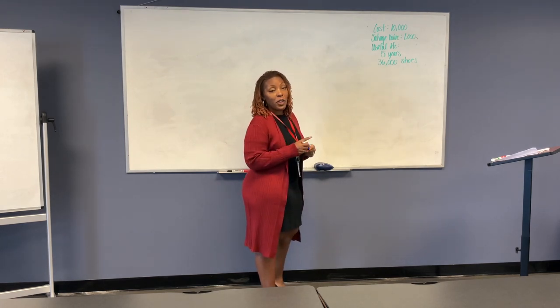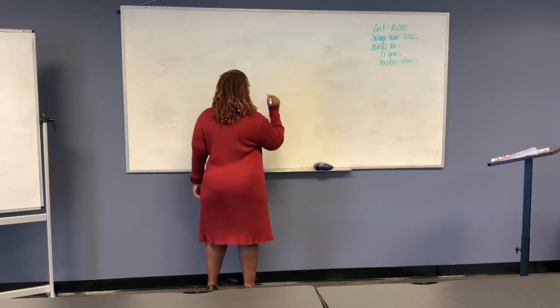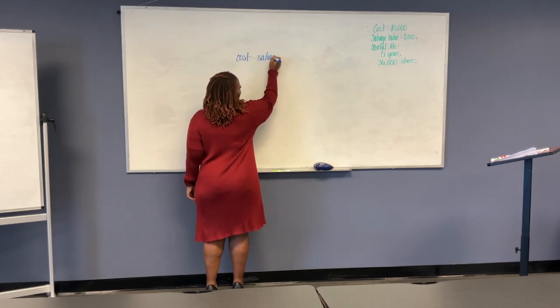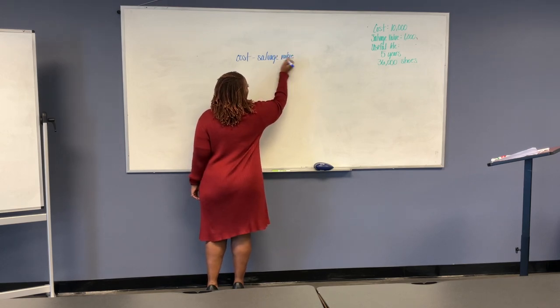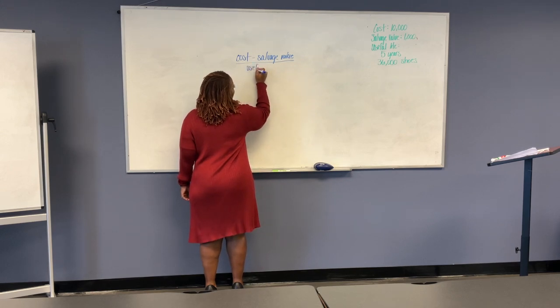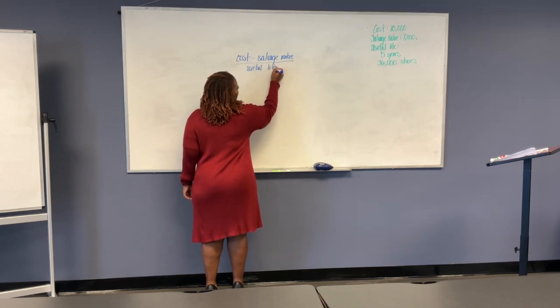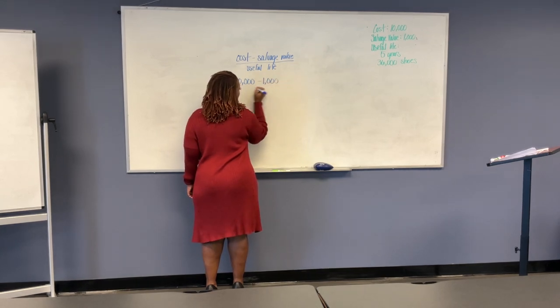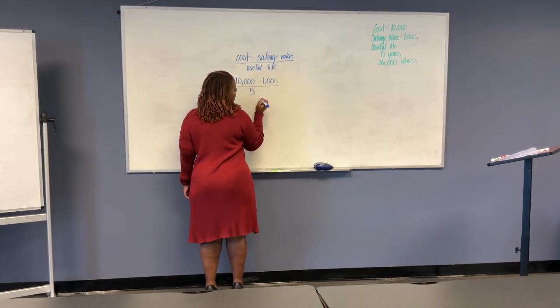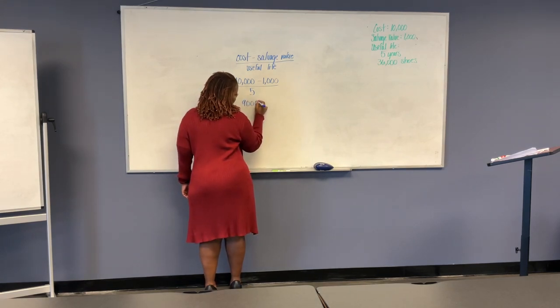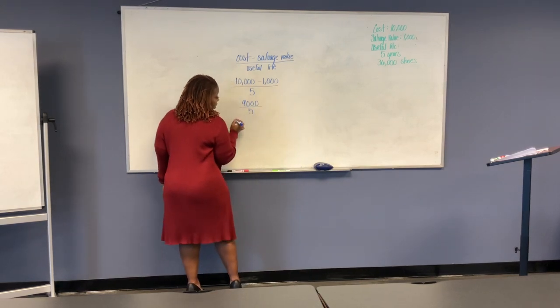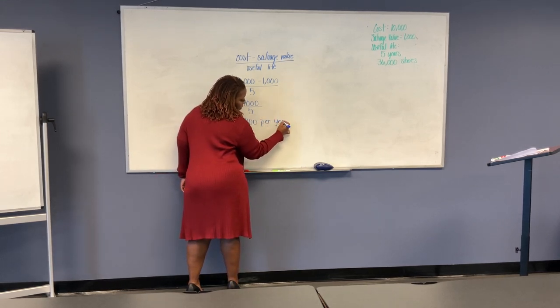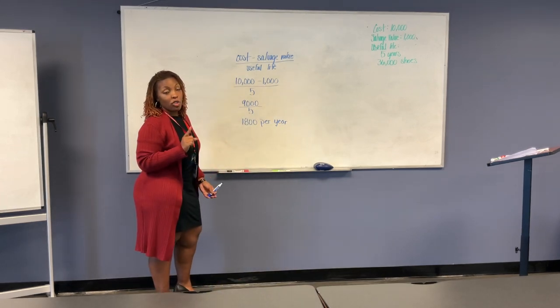So I'm going to start first with the straight line method. Straight line method is cost minus the salvage value divided by the useful life. So in the information we have there, you'll take 10,000, you'll subtract 1,000, and you'll divide by five years. That's 9,000 divided by five, which gives us 1,800 per year. That's the depreciation. That's the straight line method.